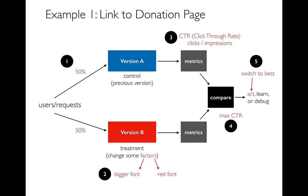Click-through rate means: out of how many times the page was shown — an impression — what percentage of those ended up being clicks. So you collected that information for both versions A and B, made a comparison, and simply said whichever has a higher rate is what we should do. Then you took an action and started deploying that page.